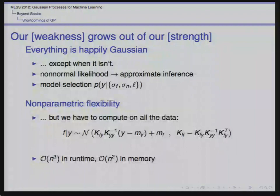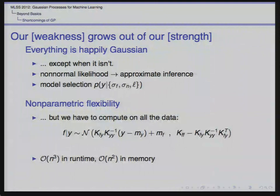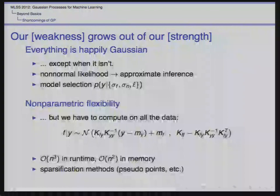This computational complexity is one of the limitations why GPs haven't been used in large-scale modeling contexts. There are two things you might think about doing. One is making N smaller — coming up with methods that are order M³, where M is smaller than N, or order NM², where M is much smaller than N. The other is trying to make that exponent of 3 smaller. These are the two ways people have tried to make GPs work more quickly.